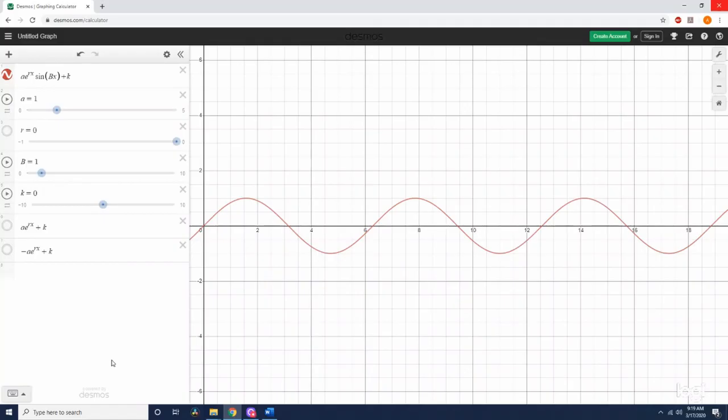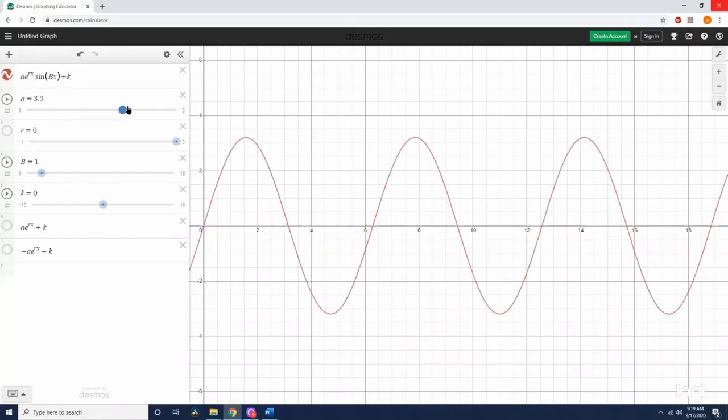Okay, so here we are in Desmos. I've set up the model here, A e to the R x times sine of capital B times x plus K. So the value of A is our usual amplitude. So as it gets bigger, the amplitude gets bigger. As A gets smaller, it gets smaller.